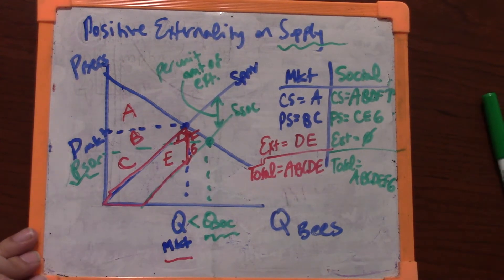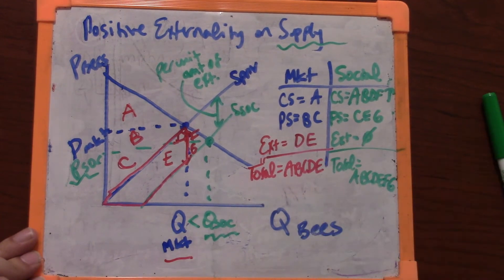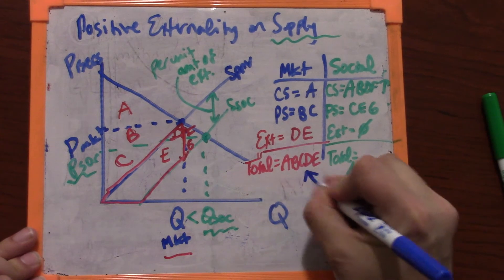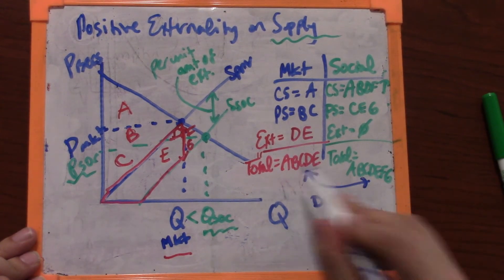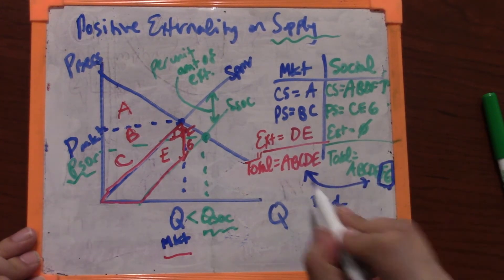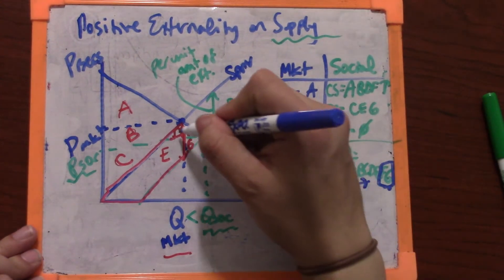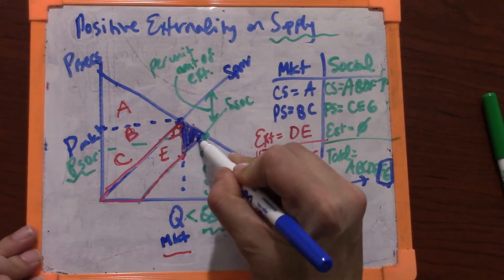Deadweight loss is always the difference between the two columns. So deadweight loss will be this total minus that total. It's the two letters that are present here and are not present over there. It's F and G. This is the deadweight loss from getting too little bees.